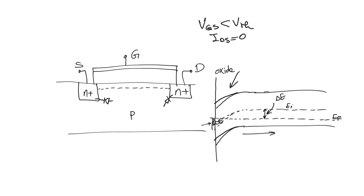So there is a discrepancy between how we define the threshold voltage and how we use it. We defined it as the voltage at which the channel is as n-type as the body is p-type, but then we ignored the fact that below threshold there is still an n-type channel — just not as intense. We said there is no channel below threshold and therefore no current, but that is not true. There is a weak channel, and if the gate potential is zero and there is a potential at the drain, current will flow through it. This is subthreshold conduction.